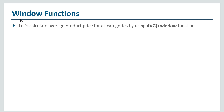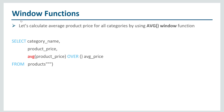Let's calculate the average product price for all categories using the average window function. We can write a query like this: select category_name, product_price, average of product_price and we will be using an over clause here. We will give a name to our column — avg_price — from the products view.